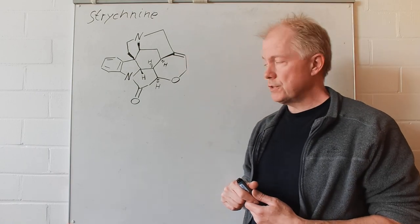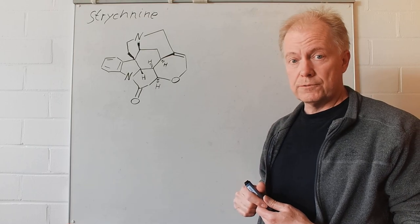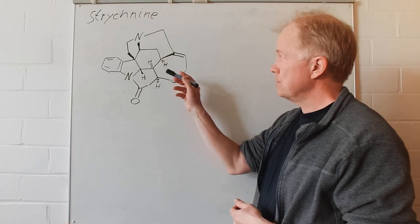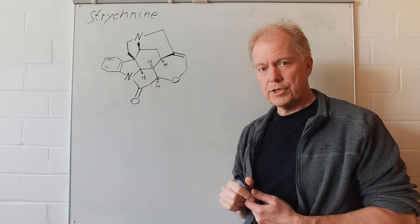Strychnine, the famous alkaloid, is well suited for practicing since it has 1, 2, 3, 4, 5 and 6 stereogenic centers.